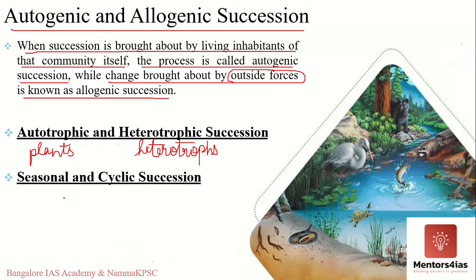Seasonal and cyclic succession, unlike secondary succession, is not dependent on disturbance. Instead, these are periodic changes arising from fluctuating species interactions or recurring events — changes in the ecosystem on a cyclical basis. For example, some plants remain dormant for a long period of time and emerge all at once, replacing other species. This is known as seasonal and cyclic succession.